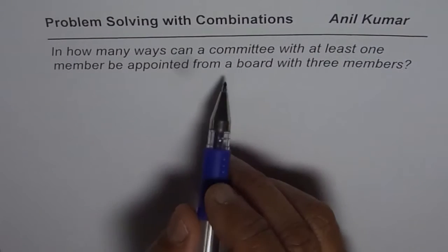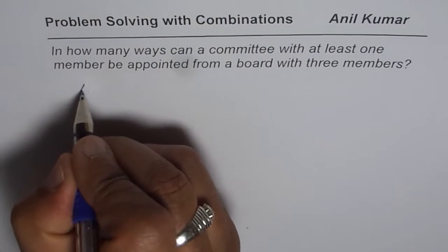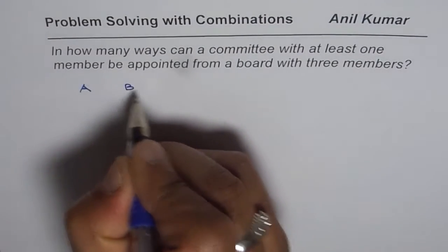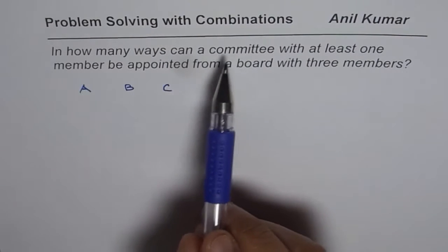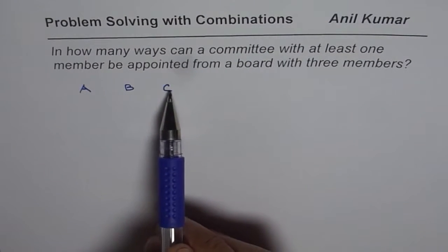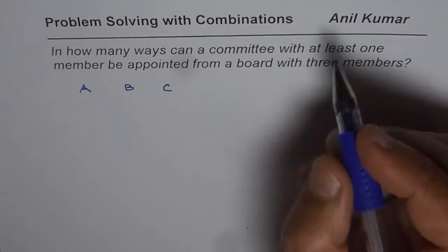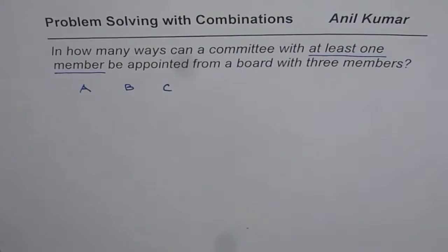Now what we are given here is that there are three members in a board. Let us say the members are A, B and C, and we need to find how many committees can be formed with these three members with at least one member in each. So that is the question.